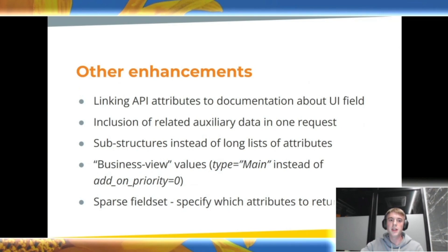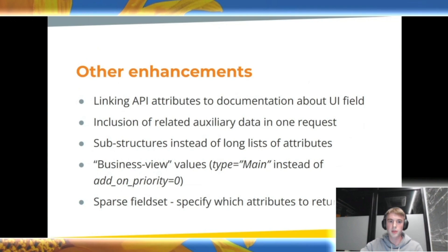We work with API schema structures with no transitive relationships and with new subcomponents. For instance, currently there is an add-on priority field in the product structure. It determines both type and priority — when the add-on priority equals zero, it means it is the main product, but when it's not zero, it means it is an add-on product and the stored number determines its priority. In the new API, for the add-on product there will be both type and priority fields in the schema, while the main product will have only a type field. The sparse field set feature will allow an API user to specify what fields to include in the response, and only those will be returned by the API server.